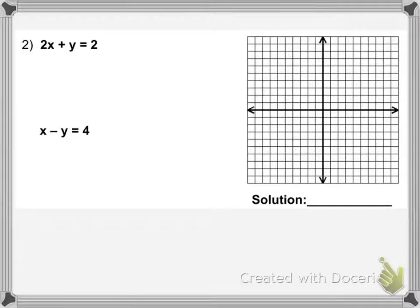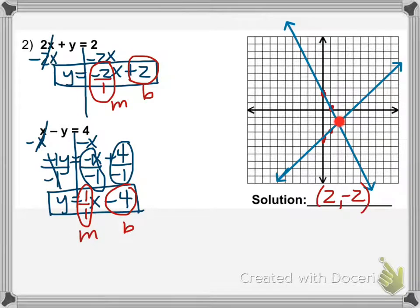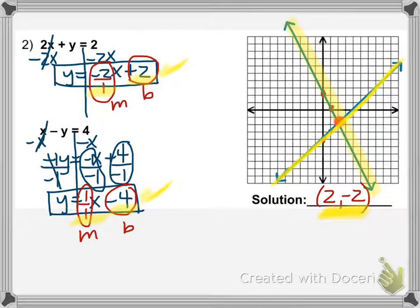Here's another example. I want you to pause the video and try this on your own. Put both equations in slope-intercept form, try to graph them by hand, and figure out where they intersect. You can also check it on your calculator. Pause now, and when you're done, unpause and check how you did. Here is the solution — this is what each equation looks like in slope-intercept form. You can see they intersect right there at 2, negative 2.